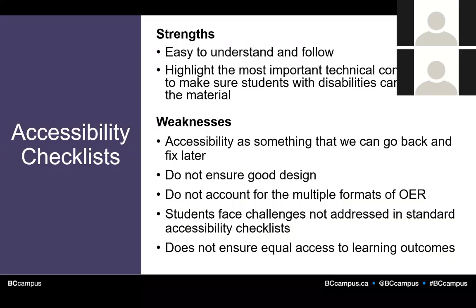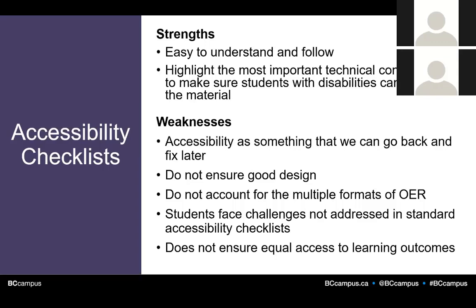A checklist approach makes accessibility seem like something that can be fixed later. It does not ensure good design. It does not account for the multiple formats of OER. Students face access challenges that are not addressed in standard accessibility checklists, and it does not ensure equal access to learning outcomes.